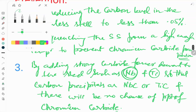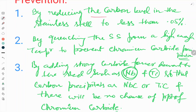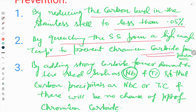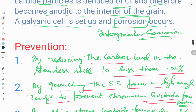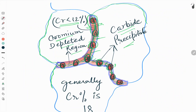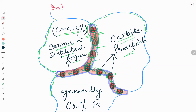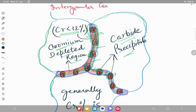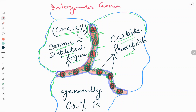In summary, we can prevent intergranular corrosion in 18-8 stainless steel: first, by reducing the carbon level to less than 0.05%; second, by quenching the stainless steel from a high enough temperature to prevent chromium carbide precipitation; and third, by adding carbide-forming elements like niobium or titanium so that carbon precipitates as NbC or TiC, eliminating the chance of chromium carbide formation. This is all about intergranular corrosion of 18-8 SS.